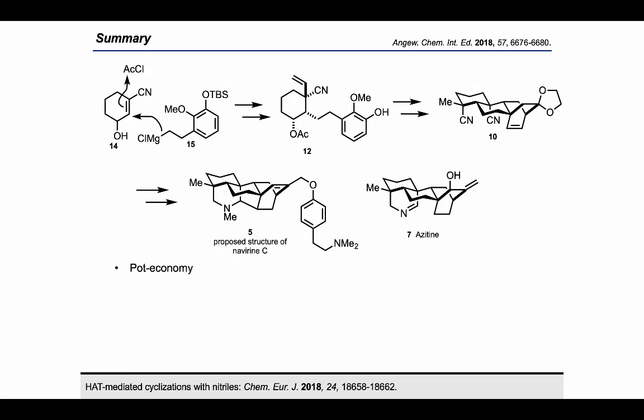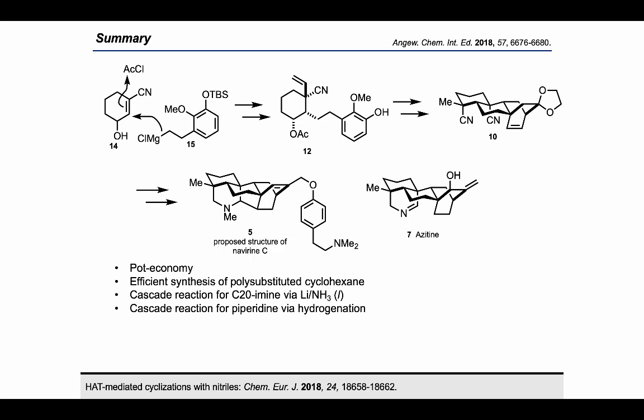In summary, we finished the first total synthesis of azitin and the proposed structure of methylene C. The synthesis featured pot-economy reactions which avoided extra purification work. A previously neglected chelation-controlled diastereoselective addition was first used in the synthesis of complex natural products. The synthesis also featured the strategic use of cascade reactions in functional group manipulation — for example, the synthesis of the C20-amine and the final piperidine in the methylene C scaffold. Most importantly, a first HAT reaction between alkene and nitrile was reported. The whole synthetic route is very efficient, and different diterpinoid alkaloids can be reached rapidly from the dinitrile intermediate.